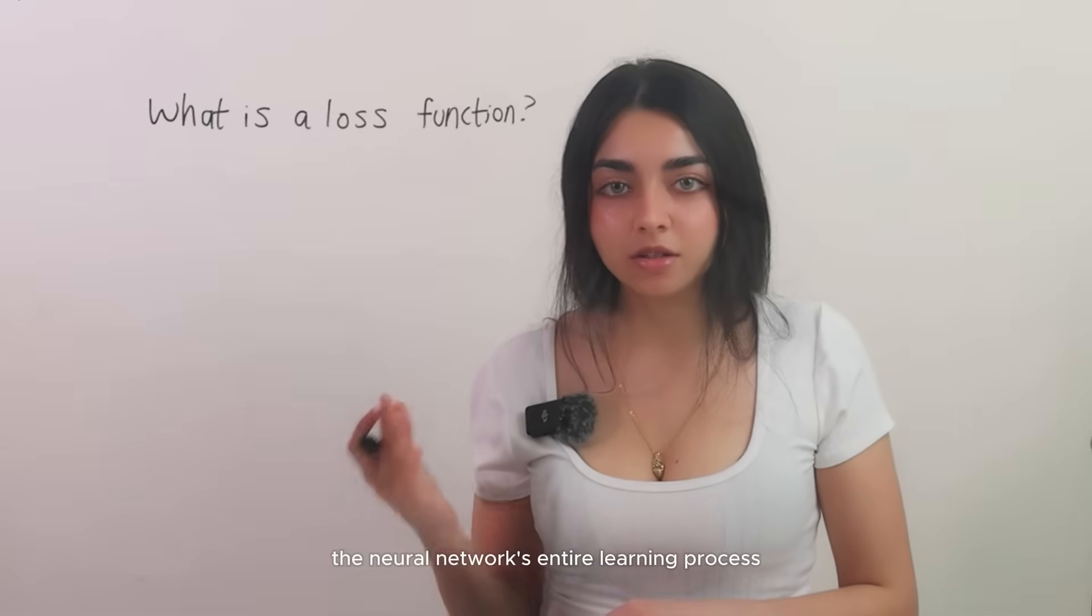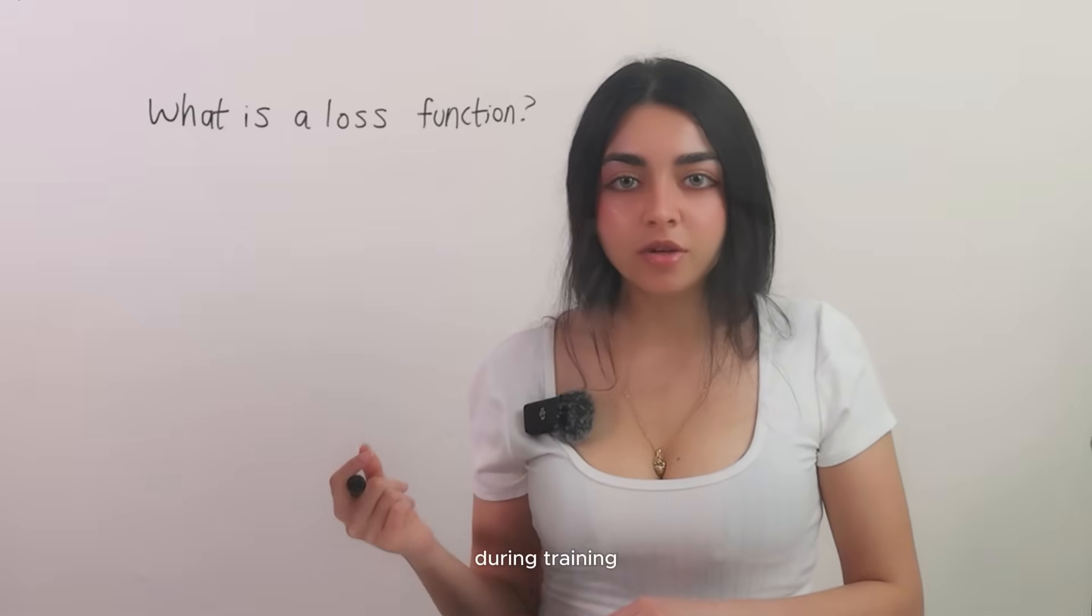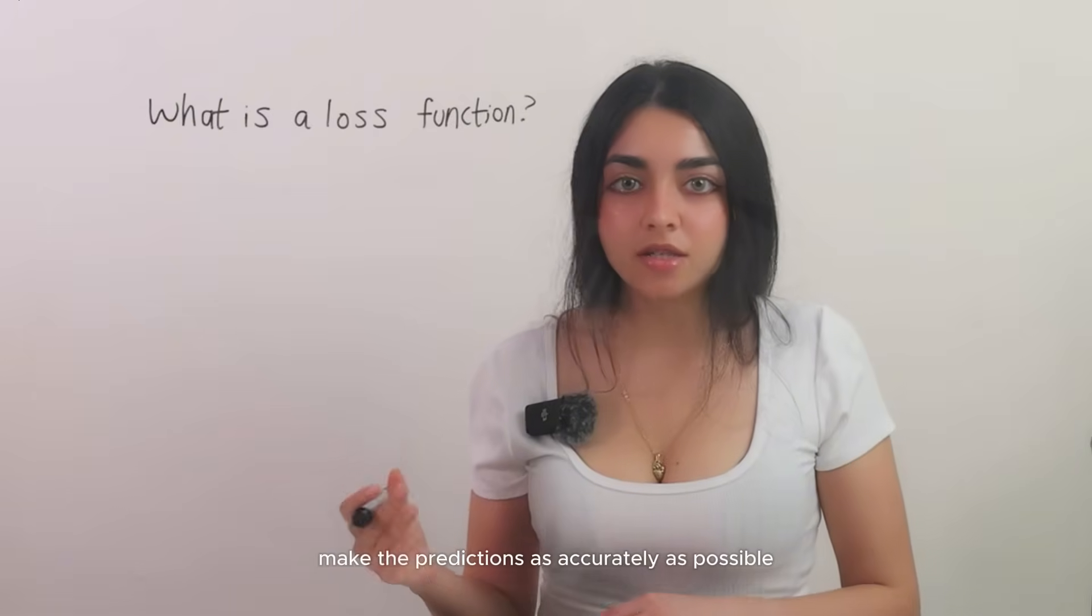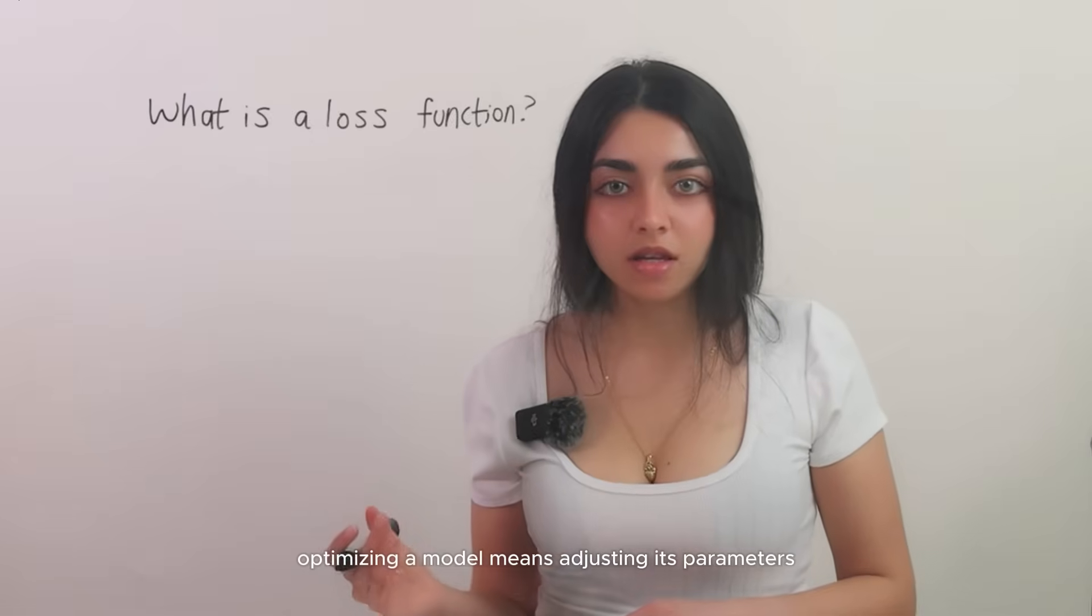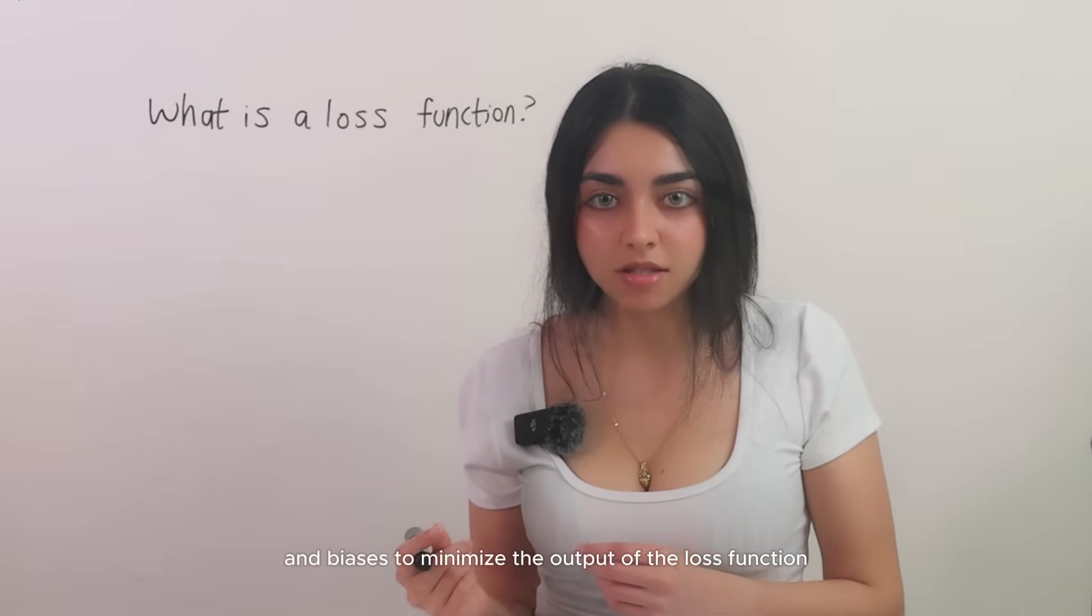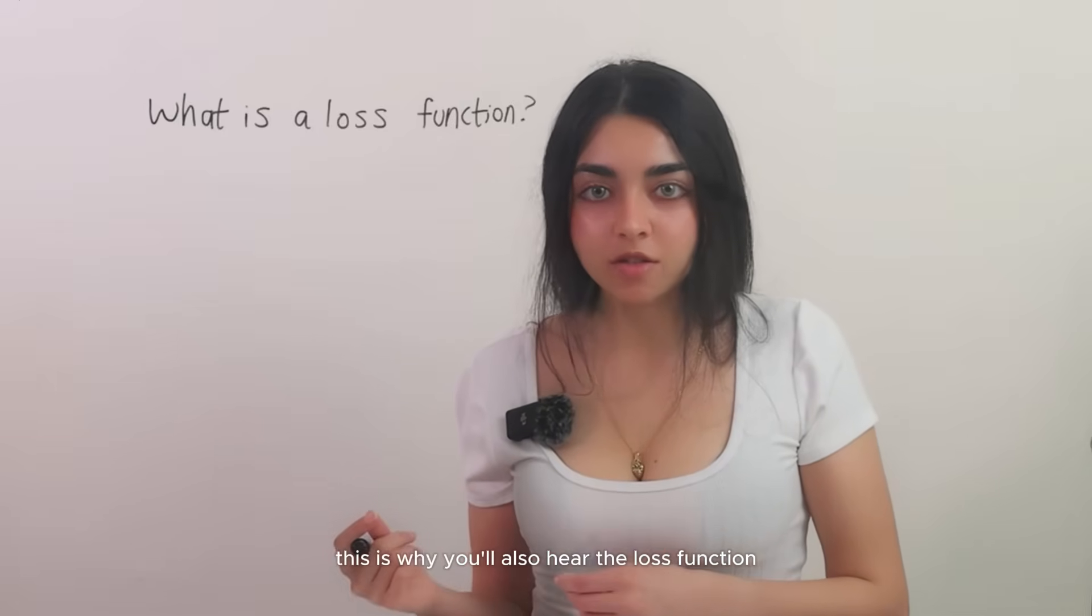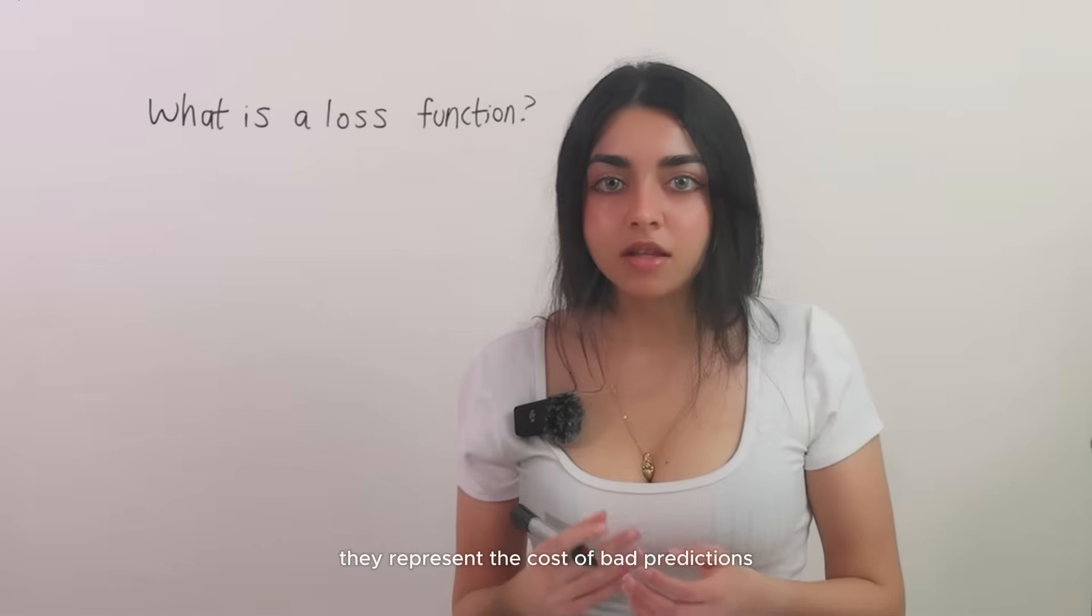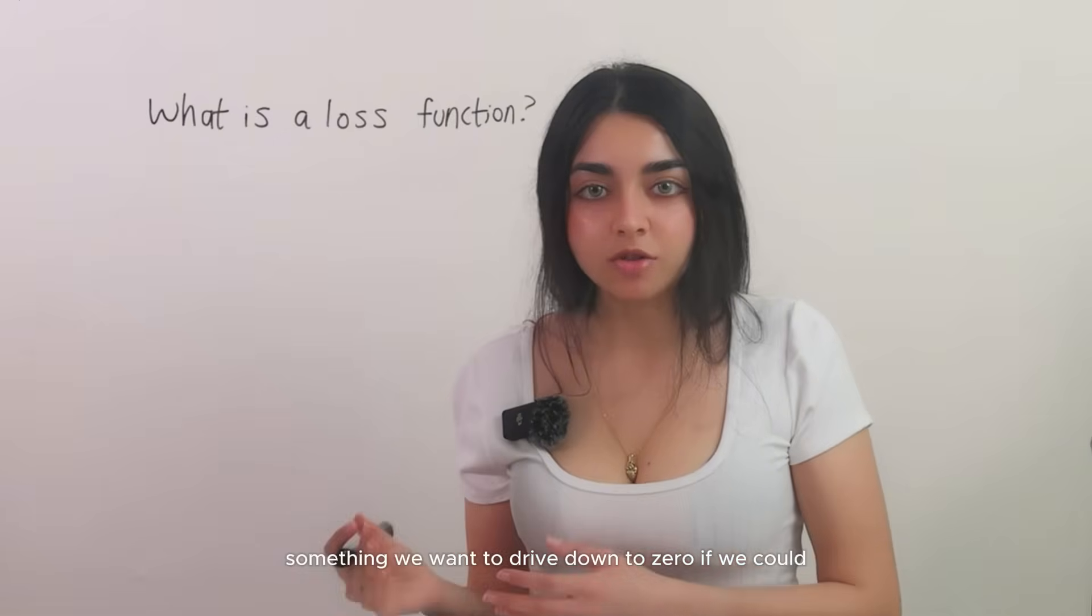The neural network's entire learning process is driven by this measure of error. During training, the goal is to minimize the loss function, or in other words, make the predictions as accurately as possible by reducing the error. Optimizing a model means adjusting its parameters, or the weights and biases, to minimize the output of the loss function. This is why you'll also hear the loss function called cost function or error functions. They represent the cost of bad predictions, something we want to drive down to zero.